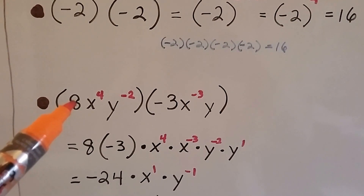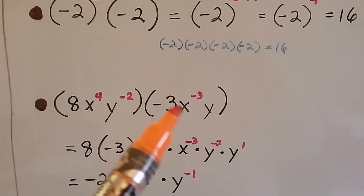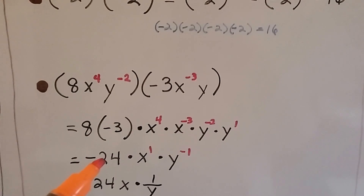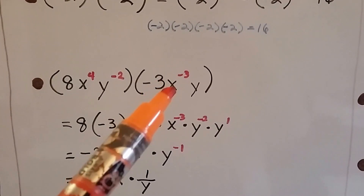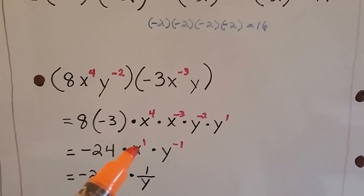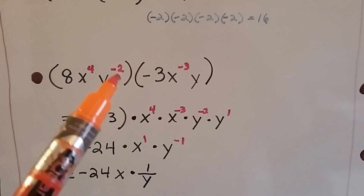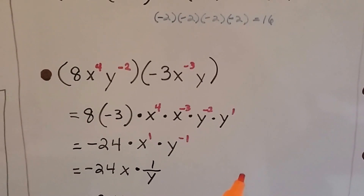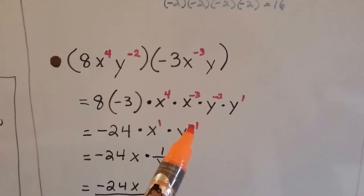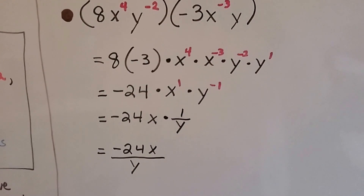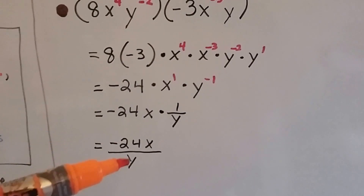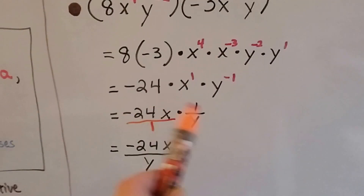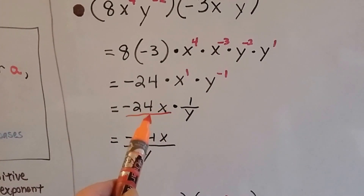If we have 8x to the fourth times negative 3y to the negative third times y, we multiply the coefficients: 8 times negative 3 is negative 24. For x: x to the fourth and x to the negative third gives x to the first, since four minus three is one. For y: negative two plus one is negative one, which makes a fraction — one over y. So our answer is negative 24x over y.